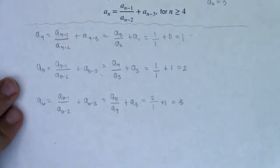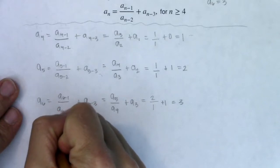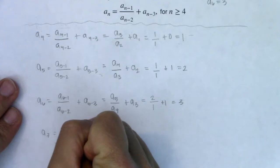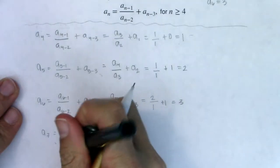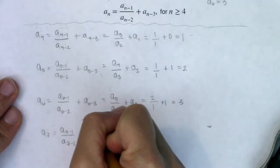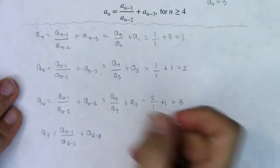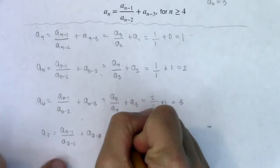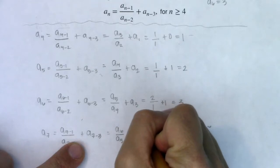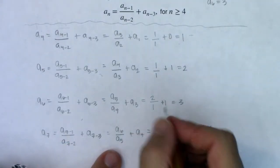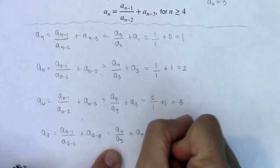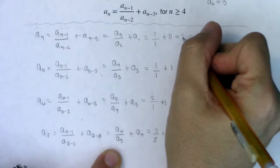Okay, so I'm not done. I still need a sub seven and a sub eight. So let's get a sub seven now. This will be a sub seven minus one over a sub seven minus two. Oops, that doesn't quite look right. Plus a sub seven minus three.